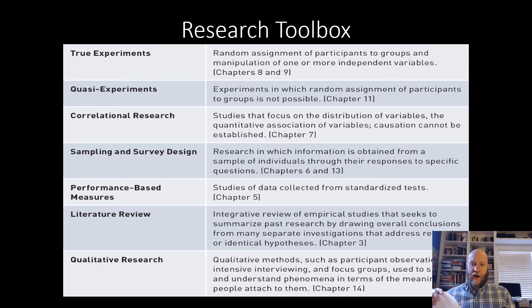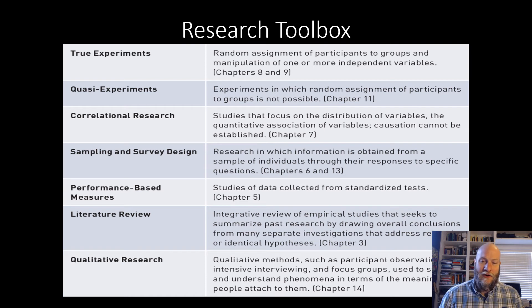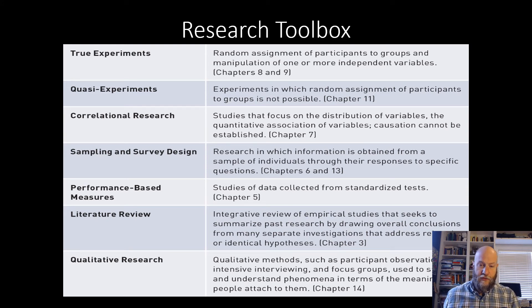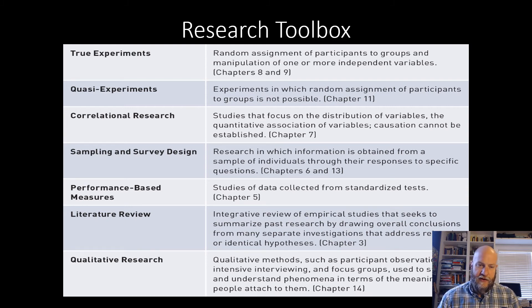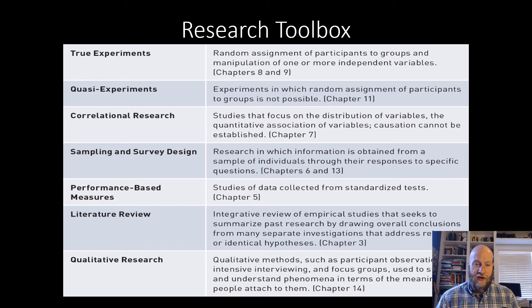I want to talk now about a way the book delineates these distinctions in different types of research. The mental shortcut they use is called the research toolbox. What they're essentially saying is that in research we have a variety of tools available to investigate scientific questions, and they break this down into six different areas: true experiments, quasi-experiments, correlational research, sampling and survey design, performance-based measures, and literature review and qualitative research. These are just different tools available to help you investigate things you're interested in.